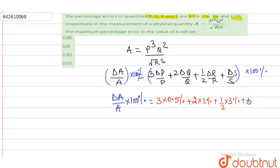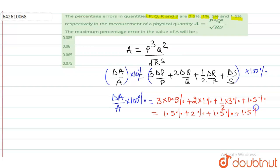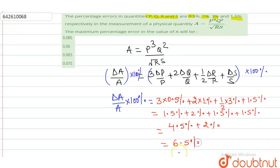Plus the percentage error in s, which is 1.5%. Now solving: 3 × 0.5% = 1.5%, plus 2 × 1% = 2%, plus ½ × 3% = 1.5%, plus 1.5%. Adding these: 1.5 + 1.5 + 1.5 = 4.5%, plus 2% gives a total of 6.5%.